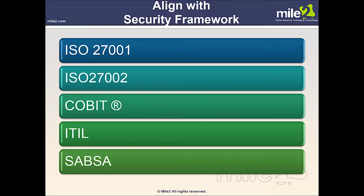The information security management system is an overarching management framework through which the organization identifies, analyzes, and addresses its information security risk. ISO 27002 establishes guidelines and general principles for initiating, implementing, maintaining, and improving security management within the organization. The controls listed are intended to address specific requirements identified through a formal risk assessment and to guide the development of organizational security standards.